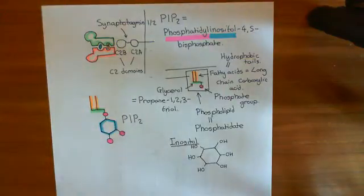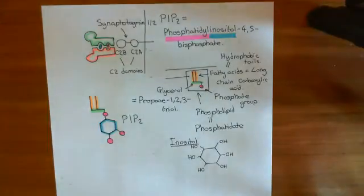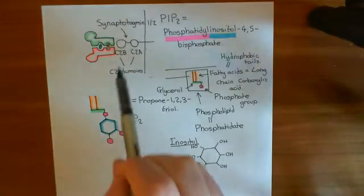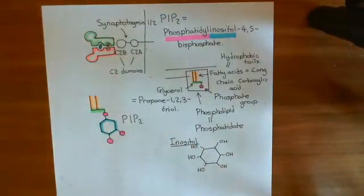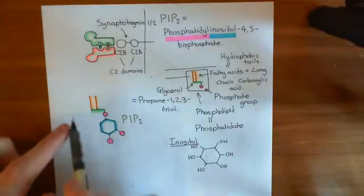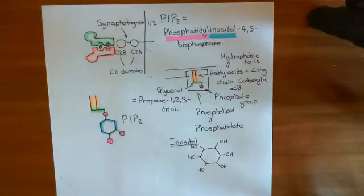Welcome to this next video in which we are discussing endocytosis, specifically focusing on adaptor protein complexes. We've seen that we target adaptor protein complexes to the plasma membrane by allowing them to interact with synaptotagmin 1-2, specifically the C2B domain of the synaptotagmin 1-2 protein, and for that interaction to occur you need PIP2 in the cell membrane.